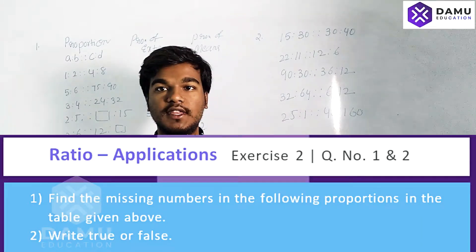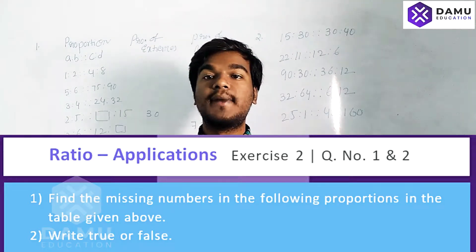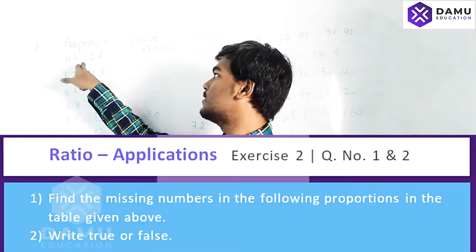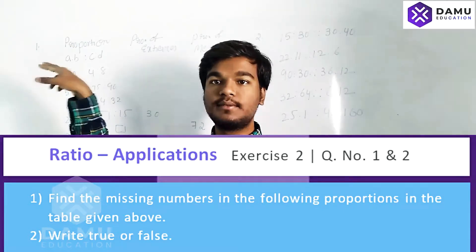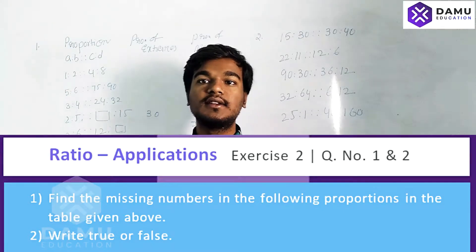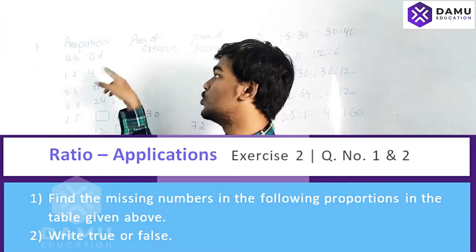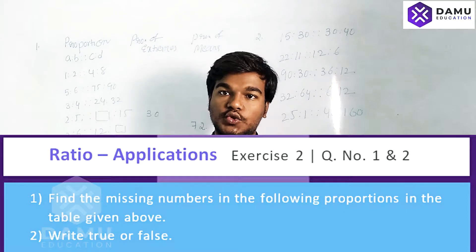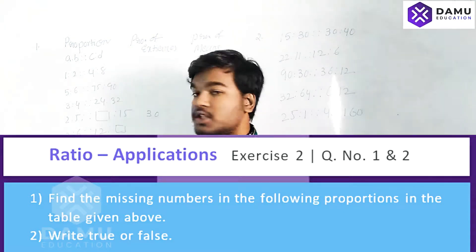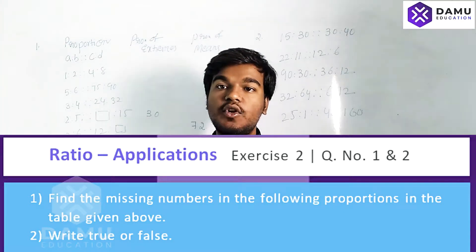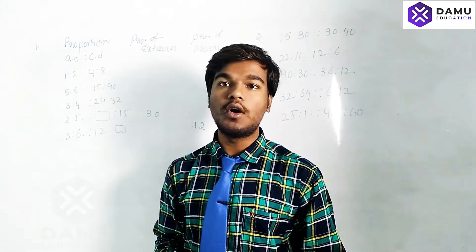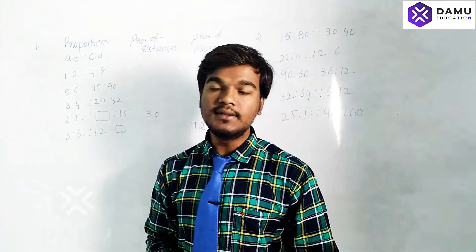If both ratios are equal, the numerator will be proportionate with the numerator and the denominator proportionate with the denominator — parallel to each other. So a is to b as c is to d. Both are equal ratios, meaning they are in proportion.